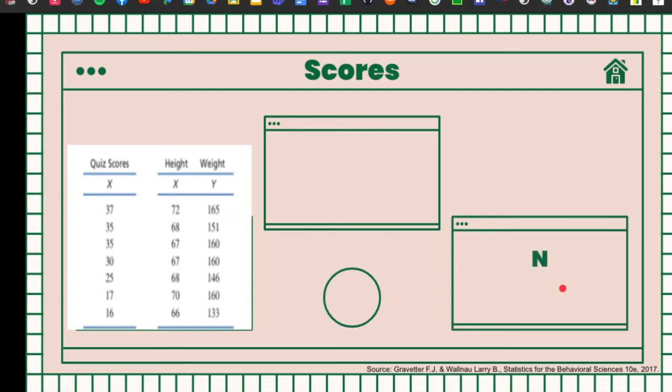So if we're going to have the uppercase N, this is the number of scores in the population, and the lowercase n is the number of scores in sample.